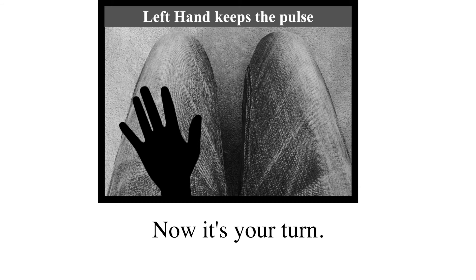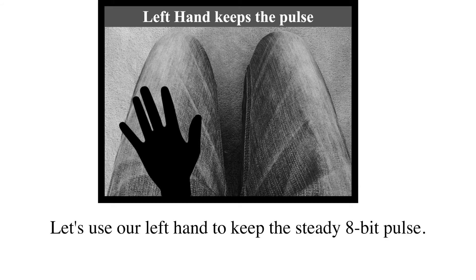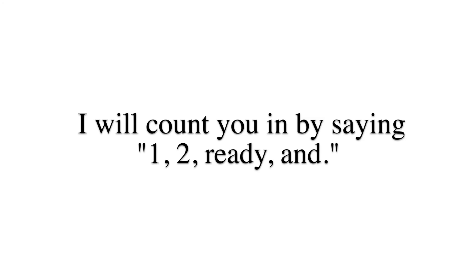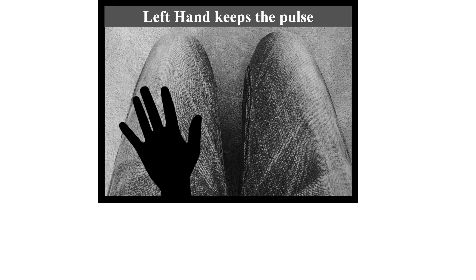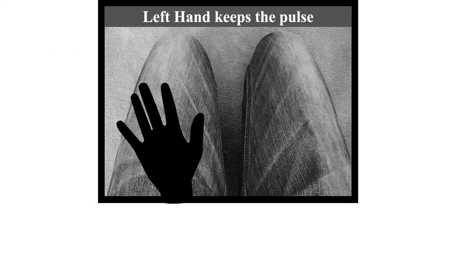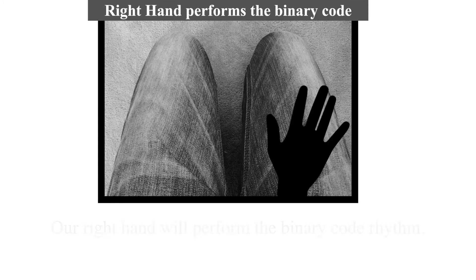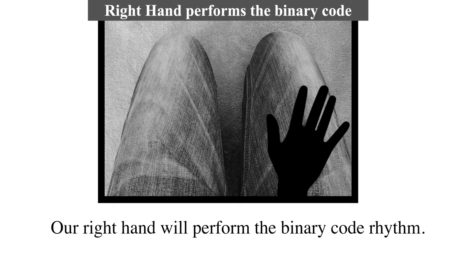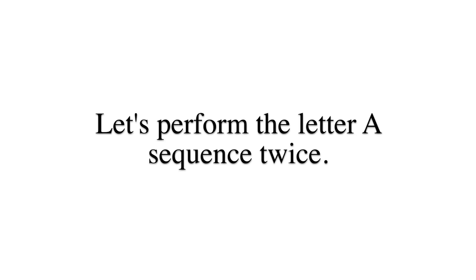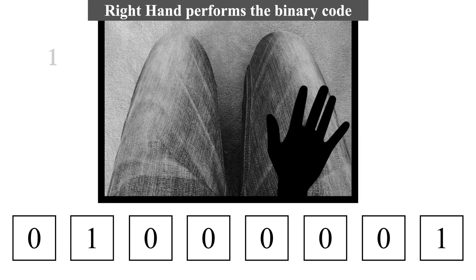Now it's your turn. Let's use our left hand to quietly keep that steady pulse. I will count you in by saying: 1, 2, ready, and. Our right hand will perform the binary code rhythm. Let's perform the letter A sequence twice. 1, 2, ready, and.